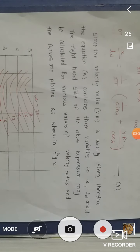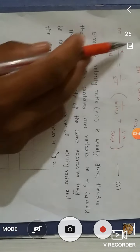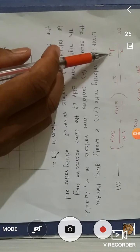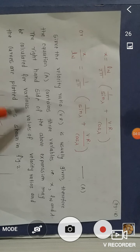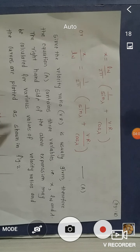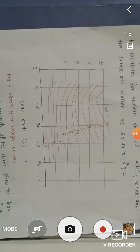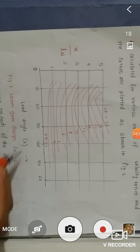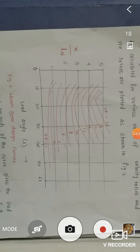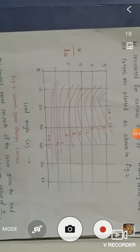Since the velocity ratio is usually given, equation A contains three variables: X (center-to-center distance), LN (normal lead), and lambda (lead angle). The right-hand side of equation A may be calculated for various values of velocity ratios and the curves plotted as shown in figure number two. In this graph, the vertical axis is X/LN and the horizontal axis is the lead angle.